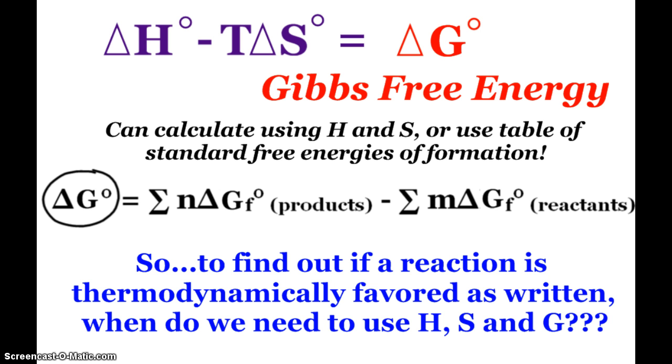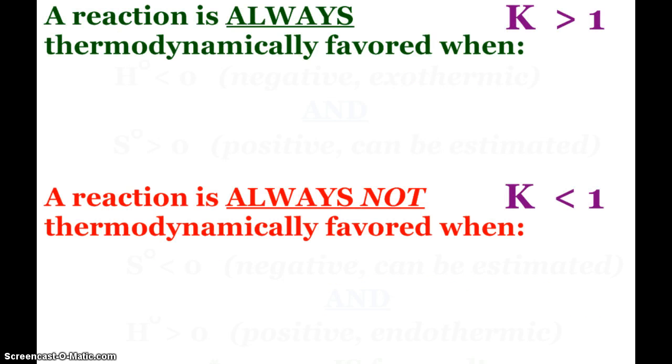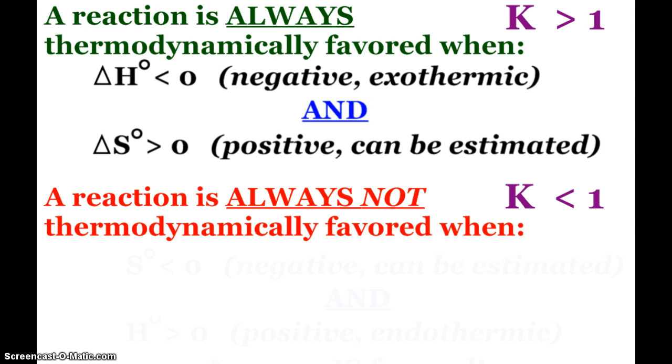So as it says there, to find out if a reaction is thermodynamically favored as written, when do we need to use H, S, and G? Well, a reaction is always going to be thermodynamically favored when ΔH is negative, meaning we have an exothermic reaction, and the ΔS is positive, meaning we have a greater entropy change.